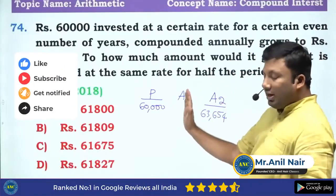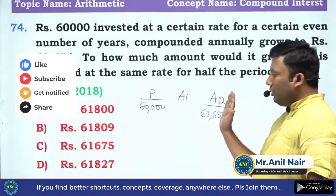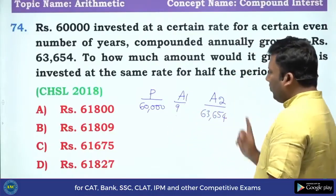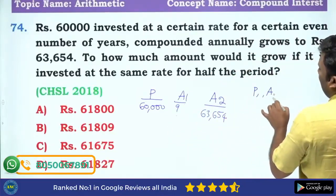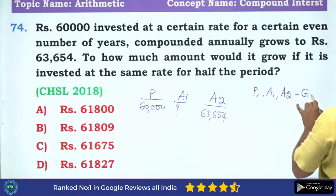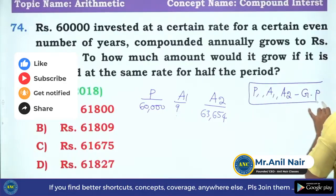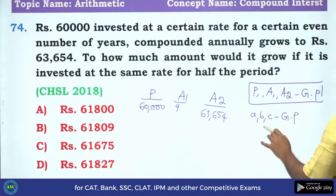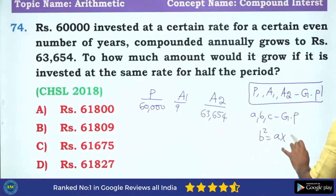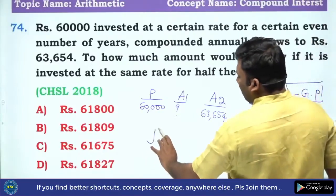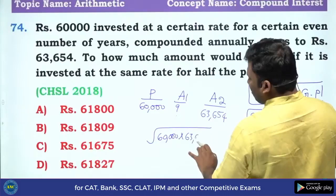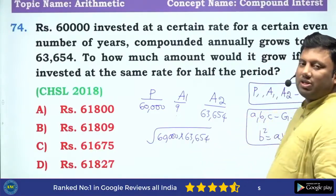If compounded for two years, half would be one year. So we have P, A1, A2 and the concept is that P, A1, A2 are in geometric progression. If A, B, C are in geometric progression, then B² = A × C. So A1² = 60,000 × 63,654.